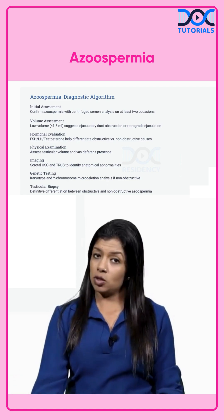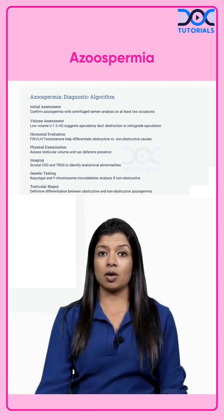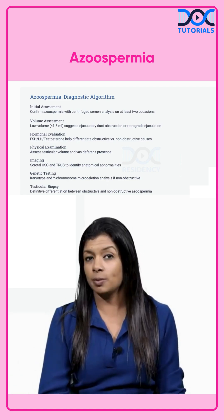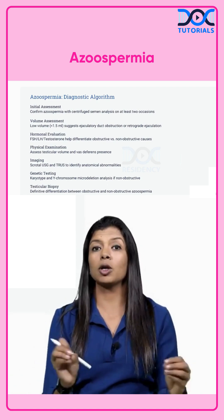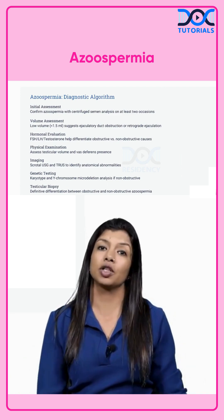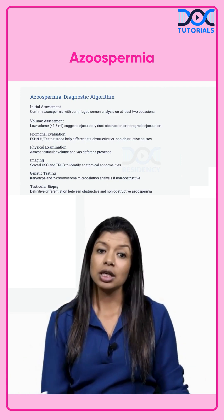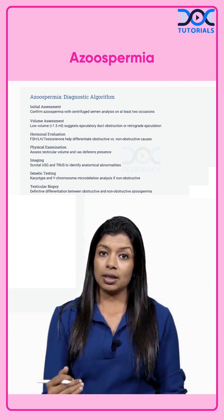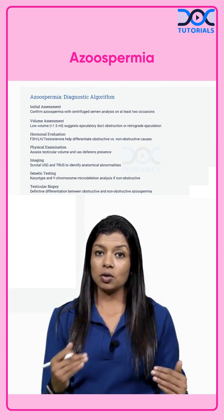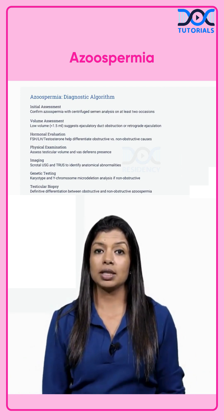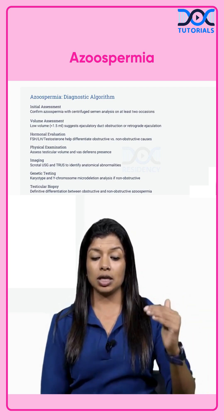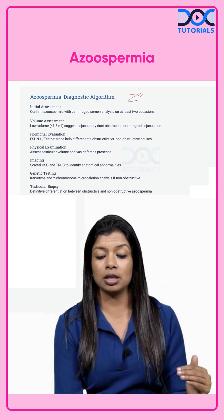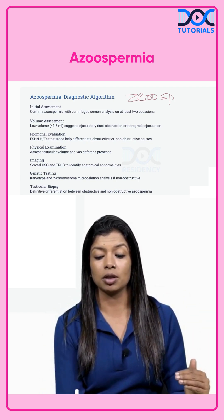Coming to the most important cause of male infertility, which is azoospermia — and why is it the most important? Because it's the most difficult to treat. The diagnostic algorithm, like we discussed, I'm going to go step by step. When you see a patient with azoospermia, azoospermia means zero sperms.